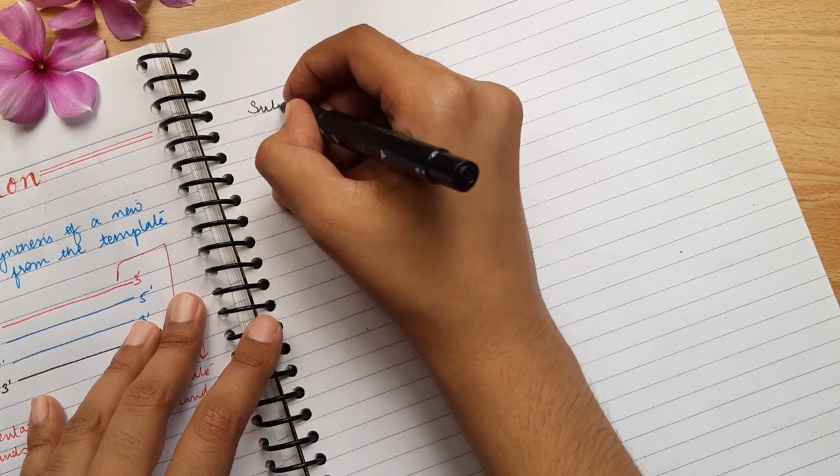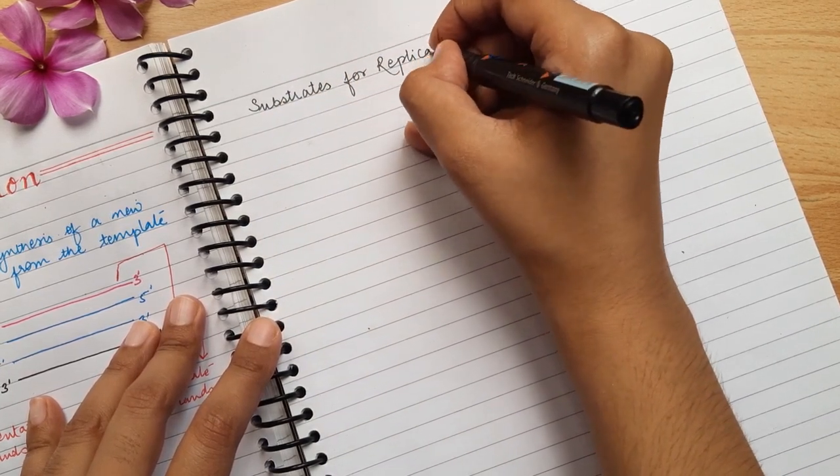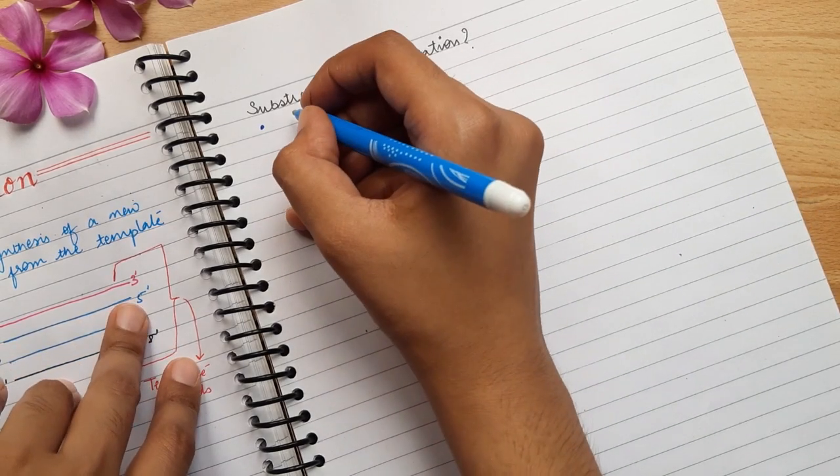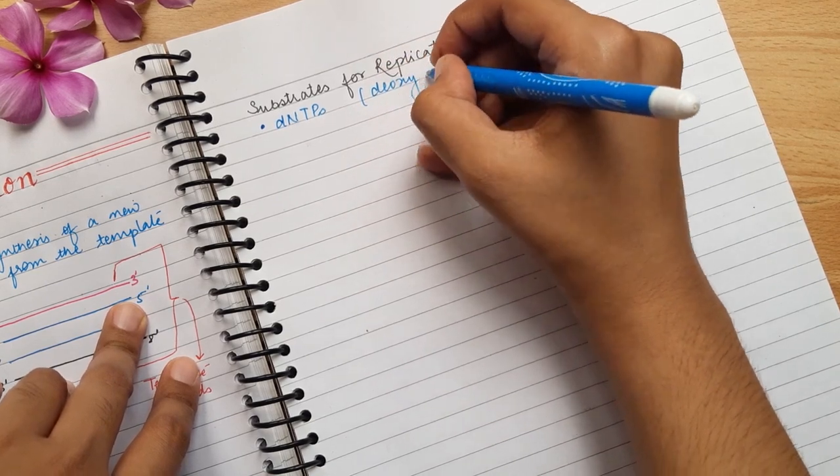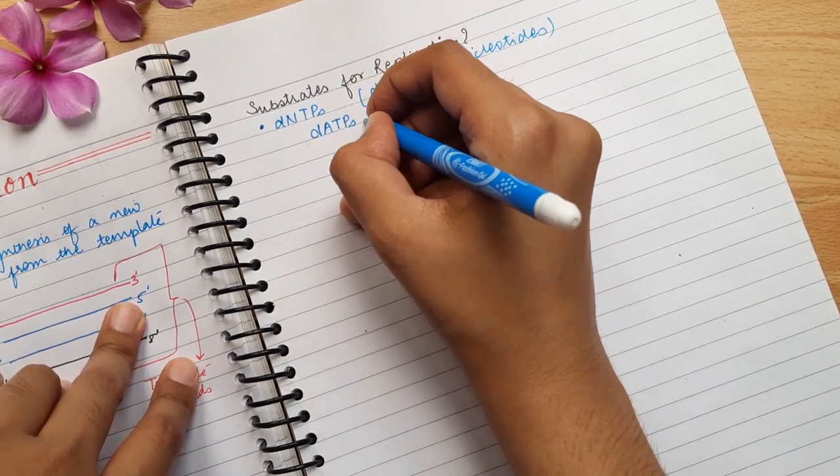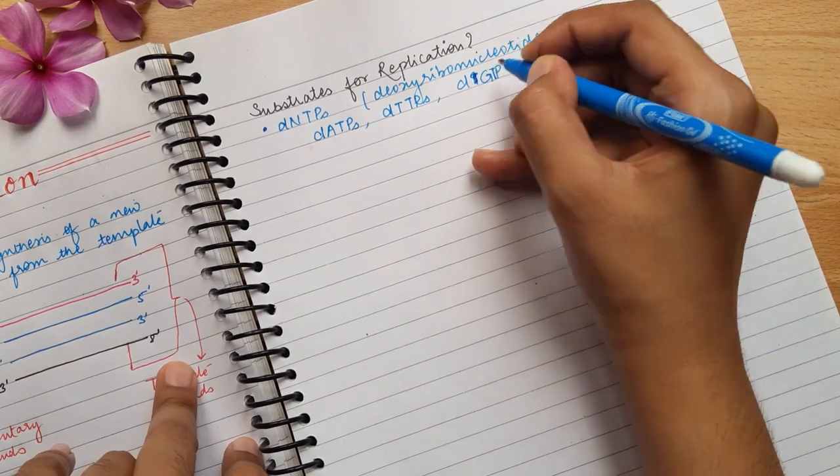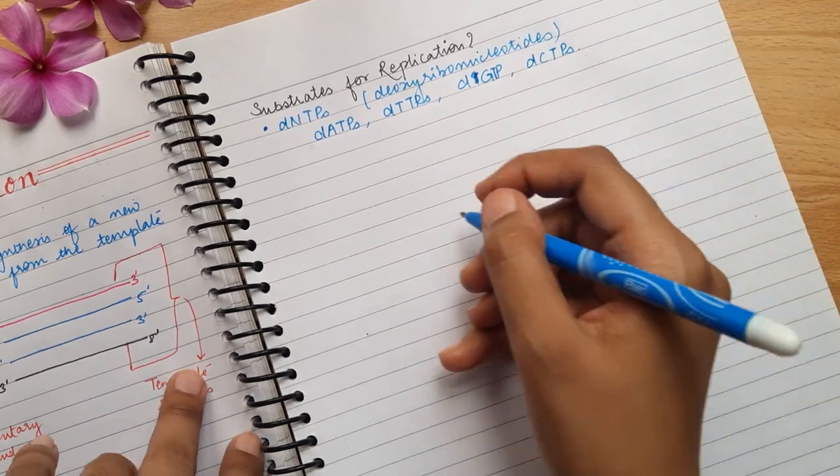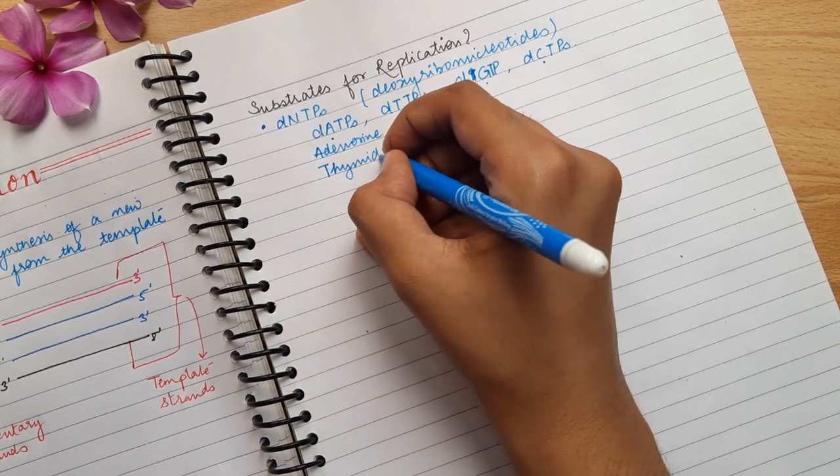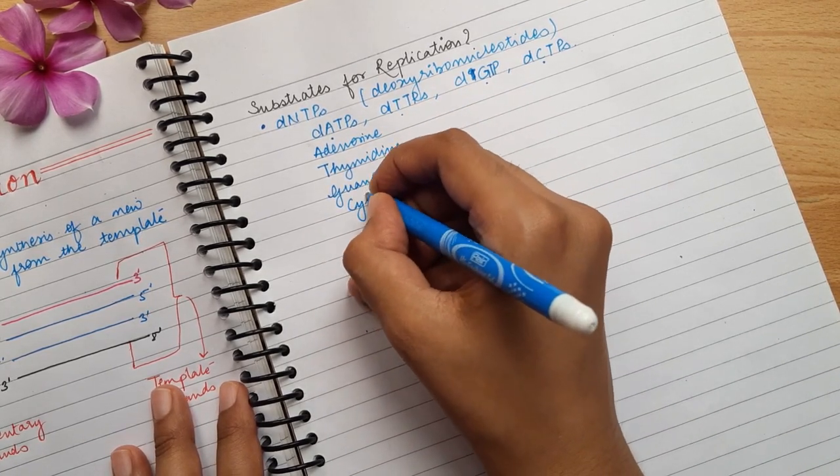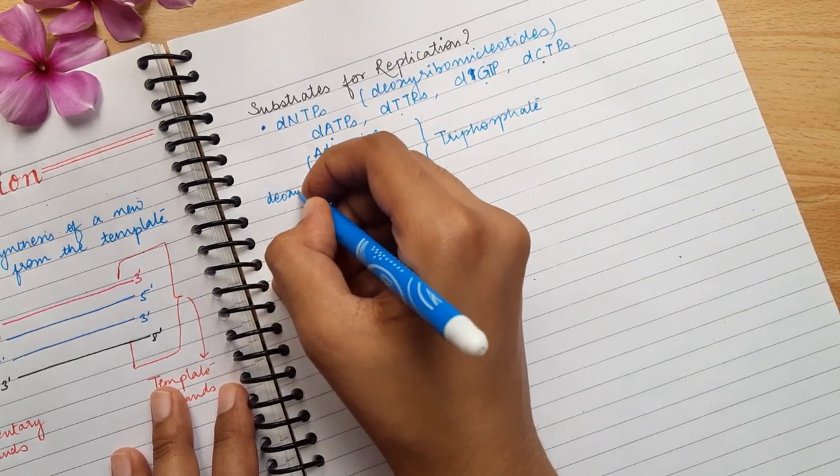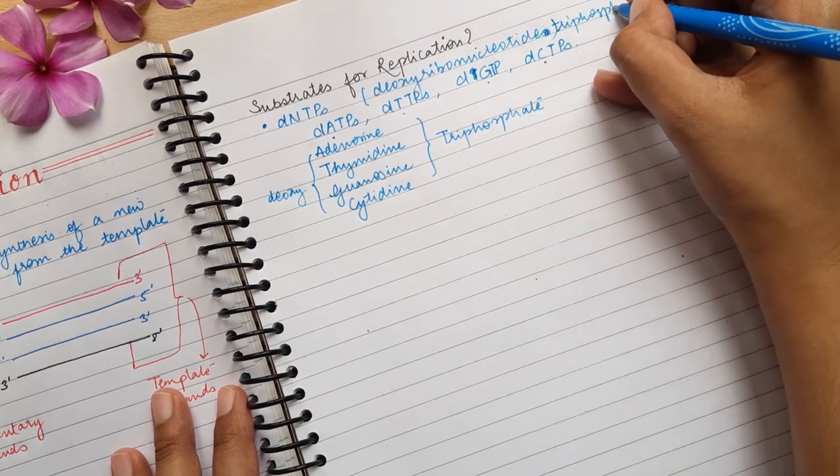Now let's talk about what are the substrates which are required for replication. The basic substrates which are involved in replication are number 1, DNTPs. Now DNTPs are deoxyribonucleotide triphosphates. Now these are of 4 types: dATPs, dTTPs, dGTPs, and dCTPs. dATPs stands for deoxyadenosine triphosphate, dTTPs stands for deoxythymidine triphosphates, dGTPs are deoxyguanosine triphosphates, and dCTPs are deoxycytidine triphosphates. Now these are dual purpose, which I'll talk about later.